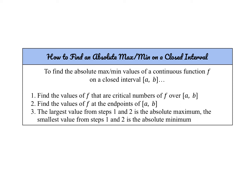Now we're going to talk about the steps to finding an absolute maximum or minimum on a closed interval. It must be a continuous function on a closed interval a to b. First, find all critical numbers over the interval a to b. Then find the values at the endpoints a and b. The largest value from those steps is the absolute maximum, and the smallest value is the absolute minimum. The absolute maximum or minimum will either occur at the critical numbers or at the endpoints.